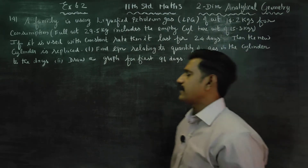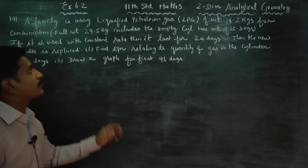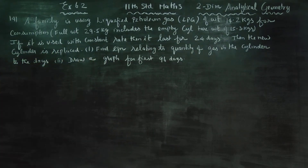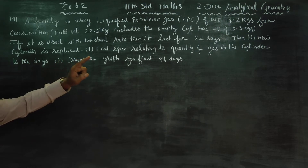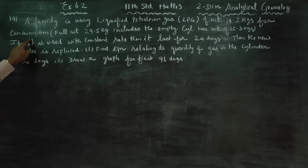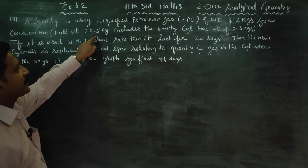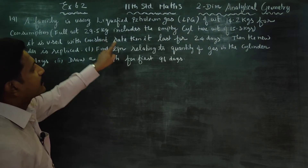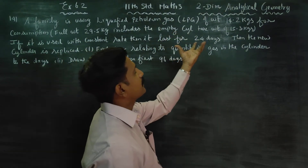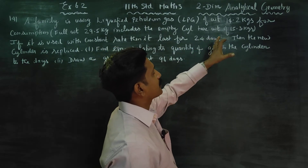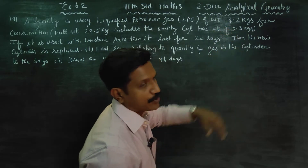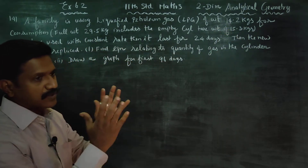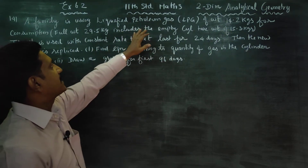A family is using LPG — Liquefied Petroleum Gas — of weight 14.2 kgs for consumption. The cylinder weight is 29.5 kgs, that is the iron part. So 29.5 minus 15.3 gives 14.2 kgs, which is the petroleum gas.